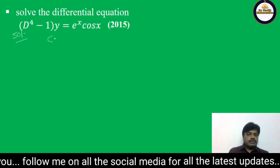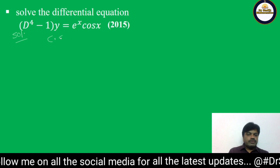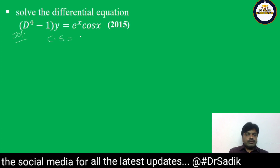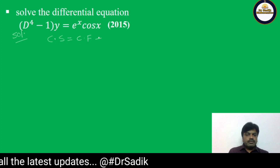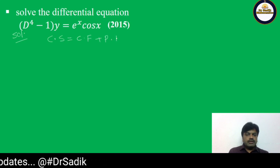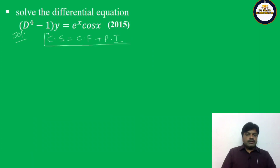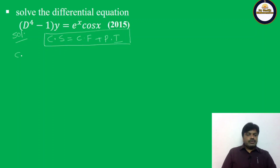Always write the complete solution. Complete solution = Complementary Function + Particular Integral. Now the first step is to find the Complementary Function.